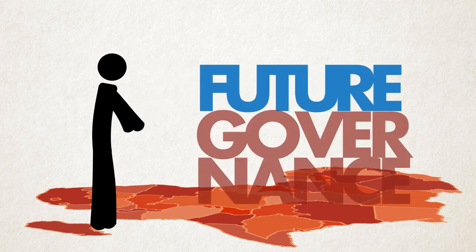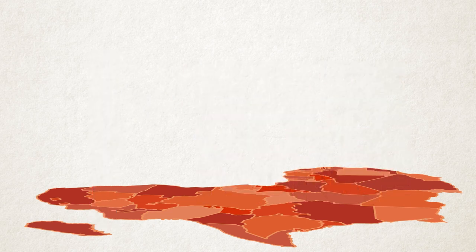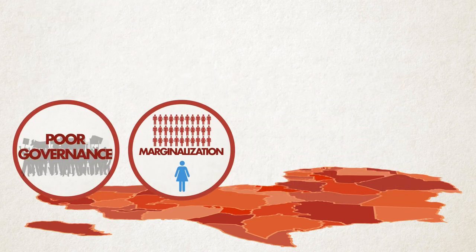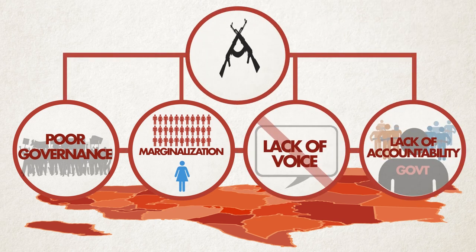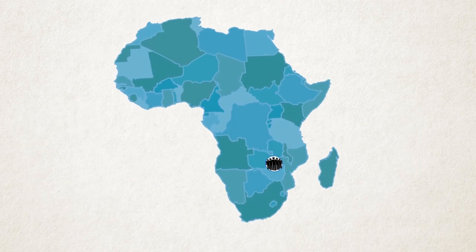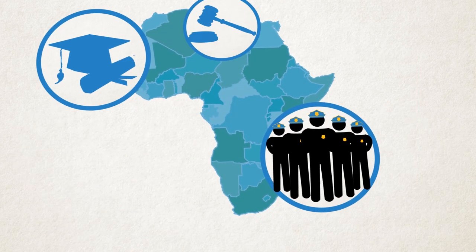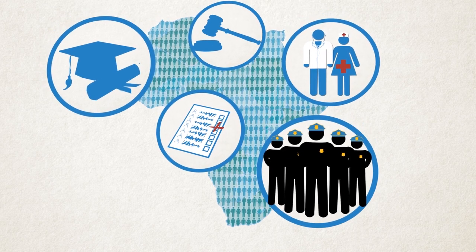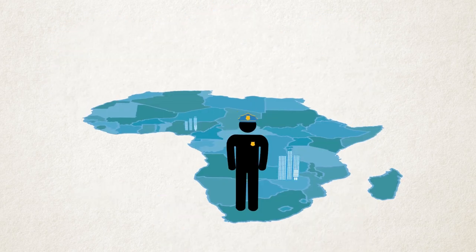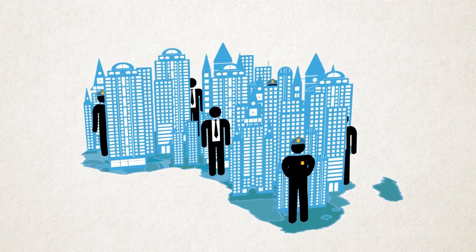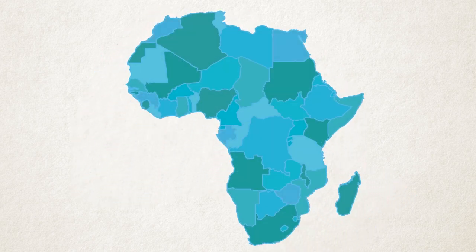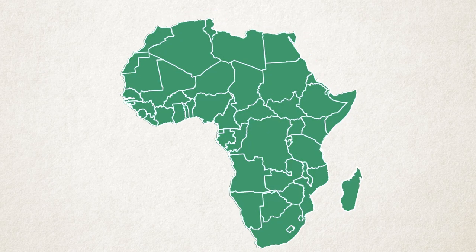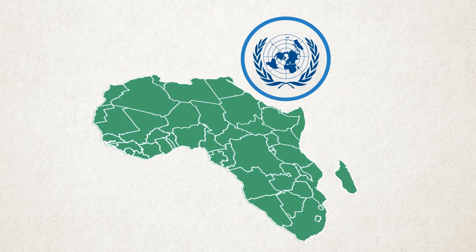But the quality and nature of governance is key. Poor governance, marginalization, lack of voice and accountability cut across many of the current conflict dynamics in Africa. We need to focus on building security, capacity and inclusion at all levels in our societies. To make development, stability and peace a reality in Africa, we require concerted effort at national, regional and continental levels, as well as the support of the United Nations.